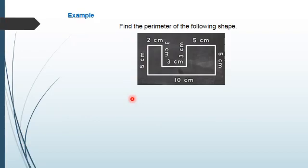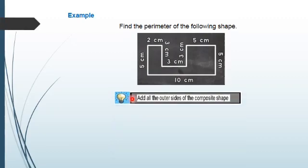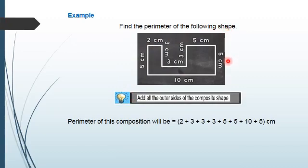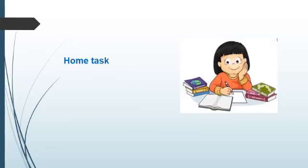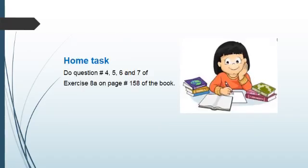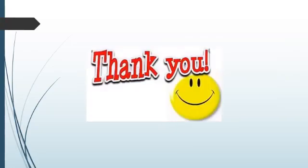Now let's solve an example: find the parameter of the following shape. What we have to do is add all the outer sides of this composite shape. The parameter of this composite shape will be equal to the sum of all its sides, and that will be equal to 36 cm. Now it's time for your home task. You have to do question number 4, 5, 6 and 7 of exercise 8A on page number 158 of the book. Thank you.